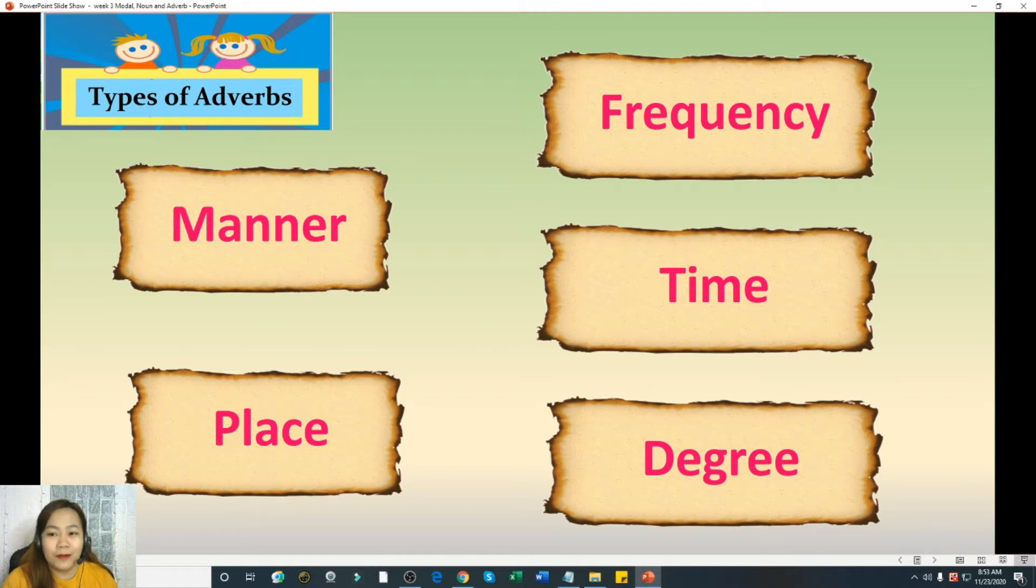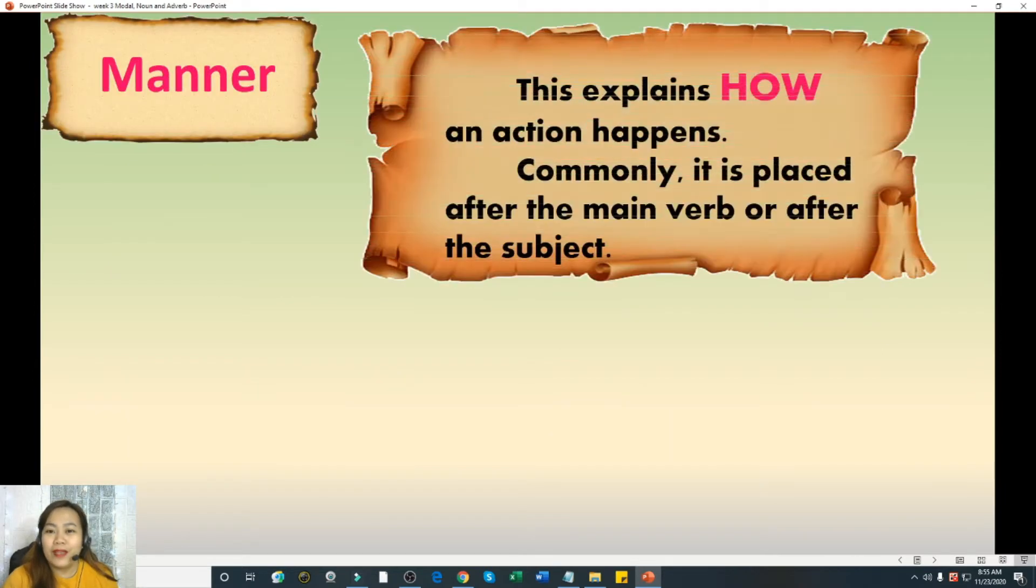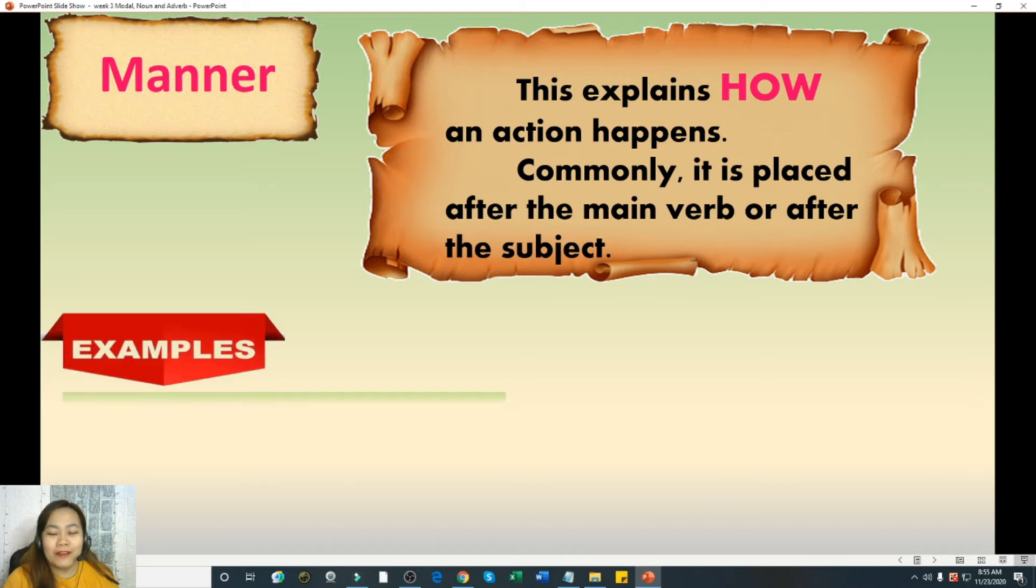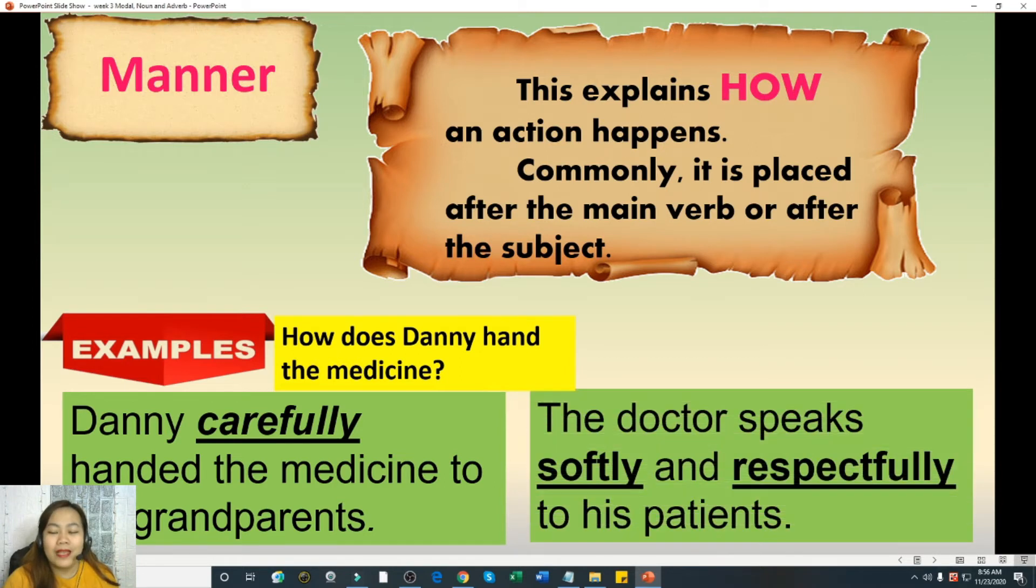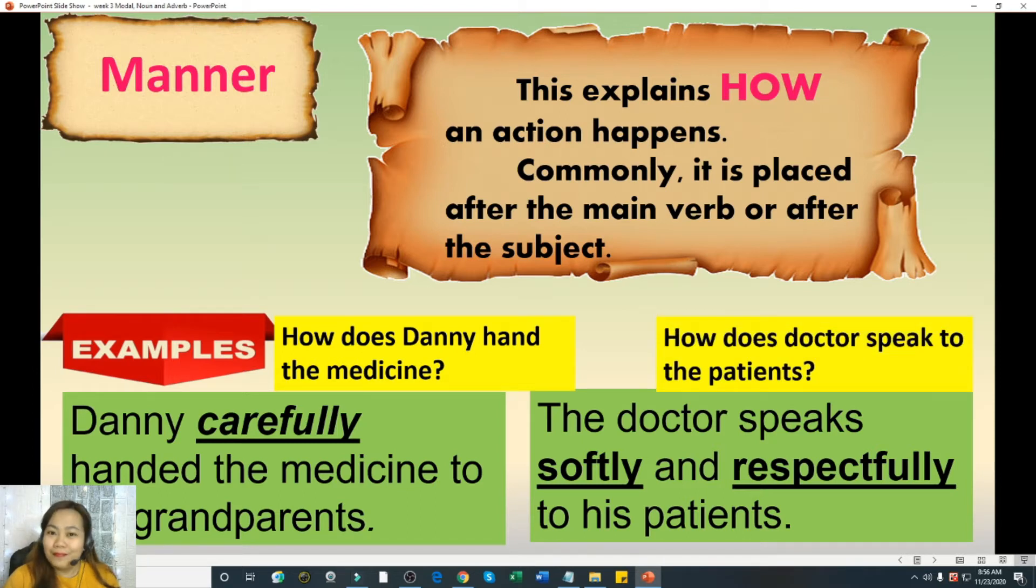Let's take first manner. So manner explains how an action happens. It answers the question how. It is placed after the main verb or after the subject. For example, Danny carefully handed the medicine to his grandparents. So how does Danny hand the medicine? Answer is carefully. So carefully is the adverb of manner in this sentence. Second one, the doctor speaks softly and respectfully to his patients. How does the doctor speak to the patients? The answer is softly and respectfully. So those are the adverbs of manner in this sentence.